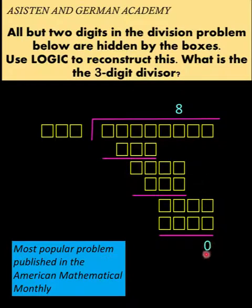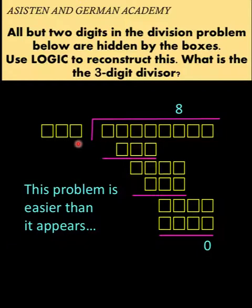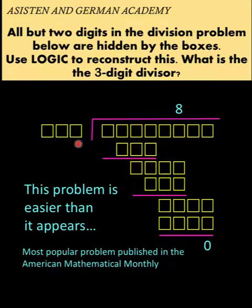The 0 here tells us that there is no remainder in this division operation. We are asked to use logic to reconstruct this division problem, and our main goal is to find the value of this three-digit divisor. This problem is easier than it appears and is considered the most popular problem published in the American Mathematical Monthly in 1954.